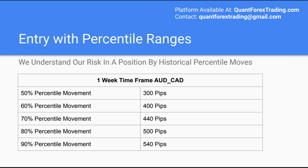Now we start to get into the basic mechanics of trading. Currency pair exchange rates fluctuate all the time, so how do we know when it's a good time to enter a trade? There are a few basic things we need to consider: do we place a buy or sell position on a currency pair? Where do we place our stop loss and take profit, and how large should our position size be? This course will cover all these three basic decisions we have to make all the time as a trader.